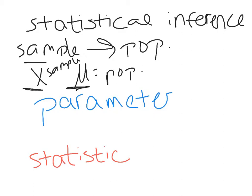We also need to talk about the difference between a parameter versus a statistic. Both of these are numbers. A parameter is a number that describes some particular characteristic of the population — think 'P for parameter and population.' It might be the proportion of a population that does a certain thing, or the mean or median of the population.